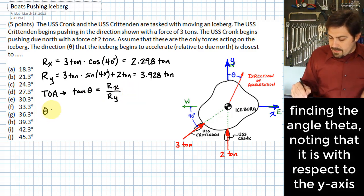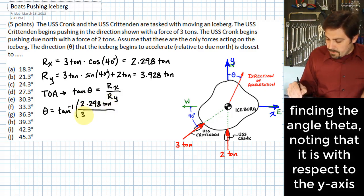So what I'll say here then is that the theta that we calculate should be equal to the inverse tangent of rx over ry, where rx is 2.298 tons over 3.928 tons.